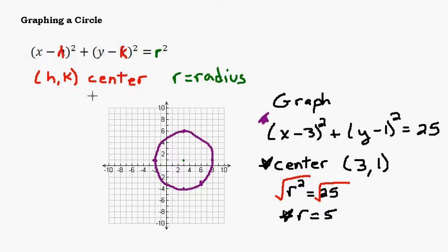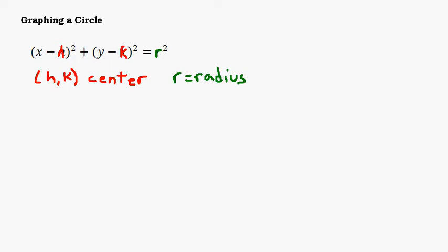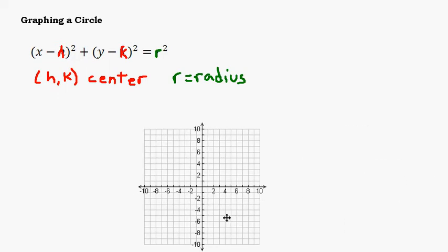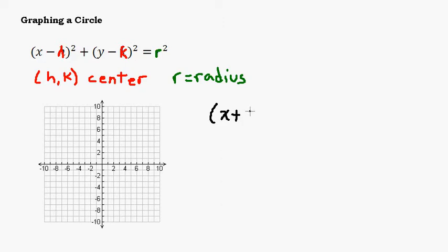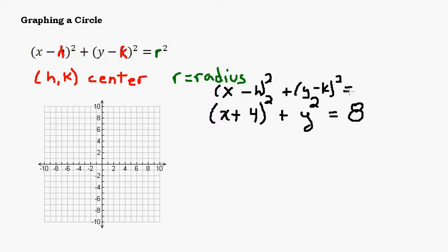Let's look at one more example that might have something a little different in it. Let's bring in another graph here. Let's do (x + 4)² + y² = 8. Okay, so if I want to figure out the center, I need to think about this form right here. Actually, let's write this form right below it. Let's write it above it. I got (x - h)² + (y - k)² = r².